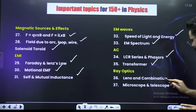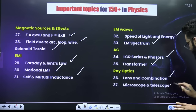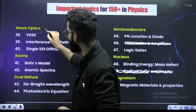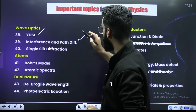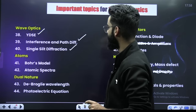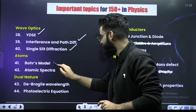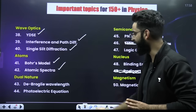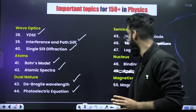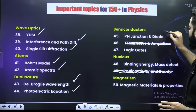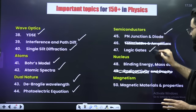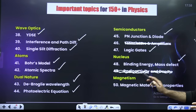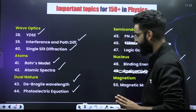From ray optics, it is lens and combination, microscope and telescope. From wave optics, it's YDSE, interference and path difference, single slit diffraction. From atoms, it's Bohr's model and atomic spectra. From dual nature, de Broglie's hypothesis and photoelectric effect. From semiconductors, P-N junction diode and logic gates. From nuclei, binding energy and mass defect. From magnetism, magnetic materials and properties.